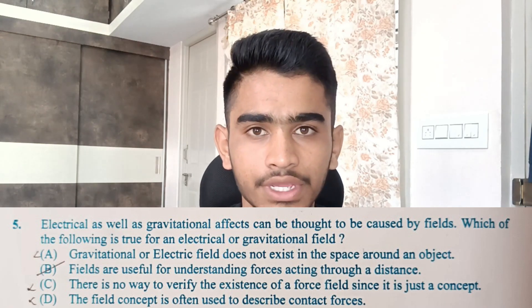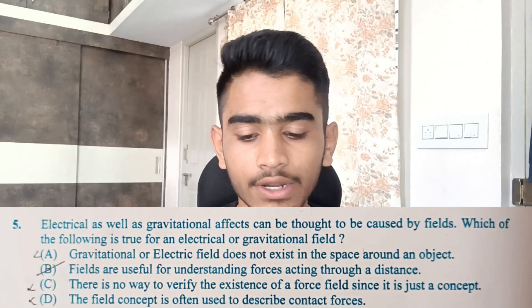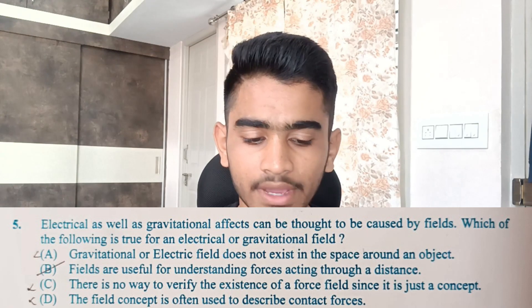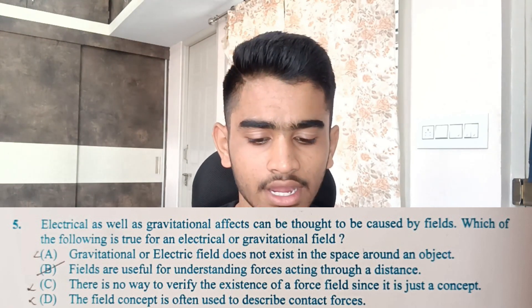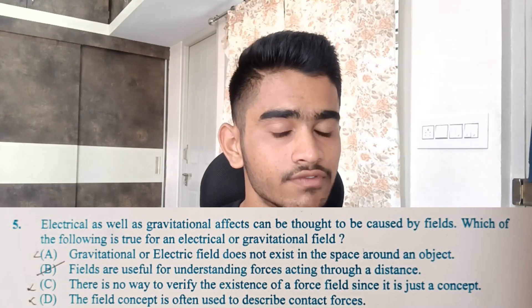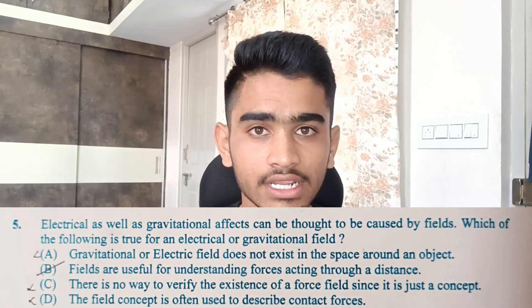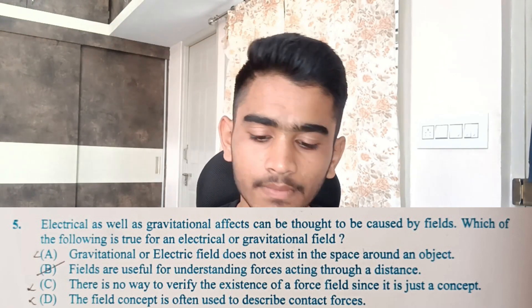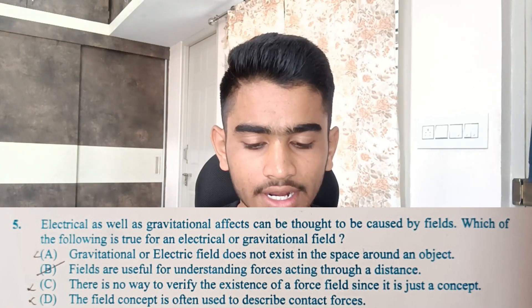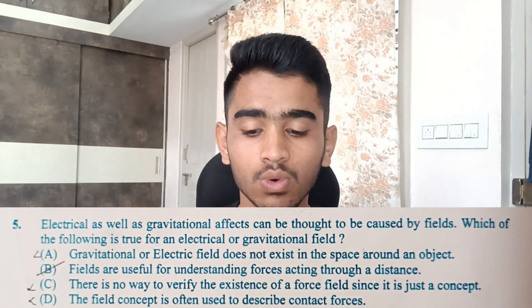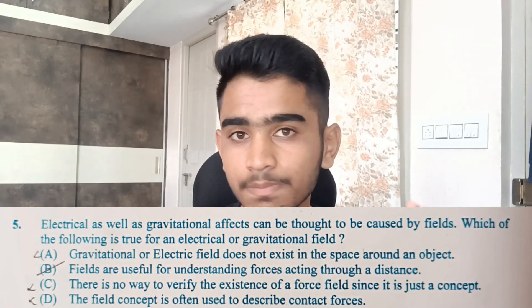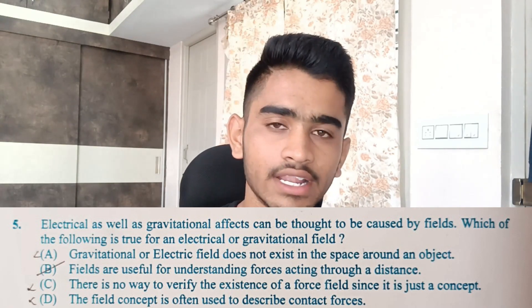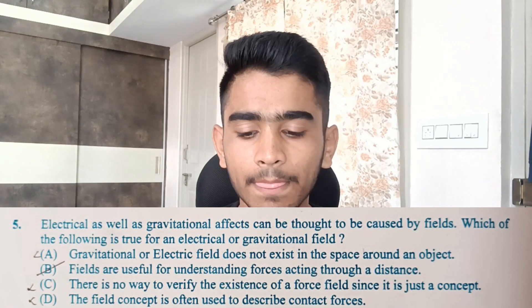First, I read the question: 'Electrical as well as gravitational effects can be thought to be caused by fields — which of the following is true for an electrical and gravitational field?' I needed a statement with common characteristics for both fields. Then I read option A: 'Gravitational or electrical field does not exist in the space around an object.' Field is a concept which involves space, so this obviously is not true since field is a property of space. I eliminated that option.